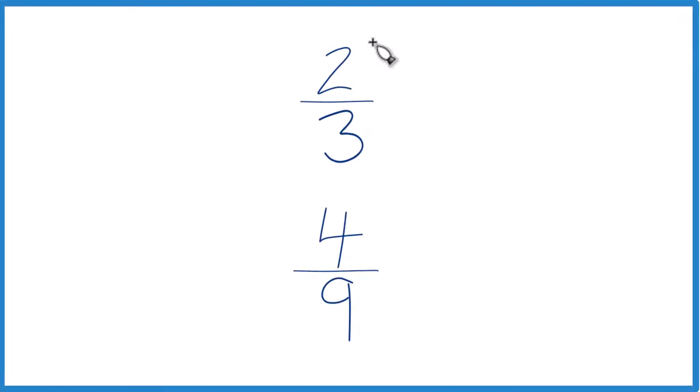So let's figure out whether two-thirds is greater than, less than, or equal to four-ninths. You may be able to reason this out by looking at them, seeing this is less than half and this is greater than half, or you could use a calculator.